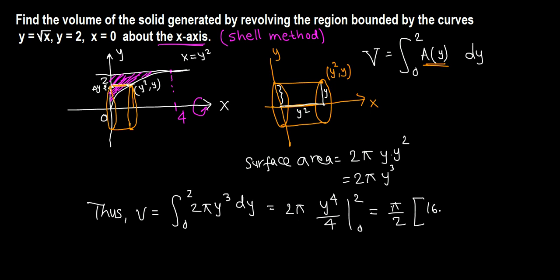Inside, 2 raised to 4 is 16, minus 0 raised to 4 is 0. So π over 2 times 16, divide 16 by 2 is 8. So 8π cubic units is the final answer.